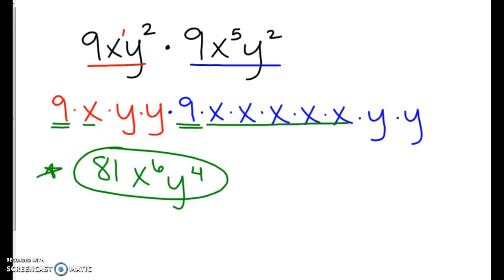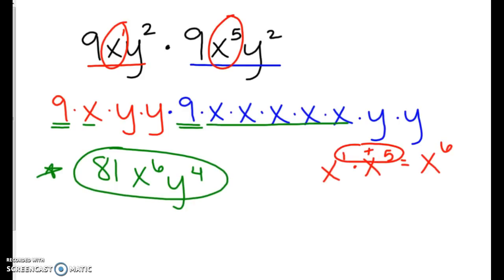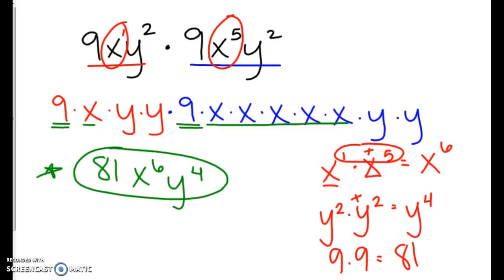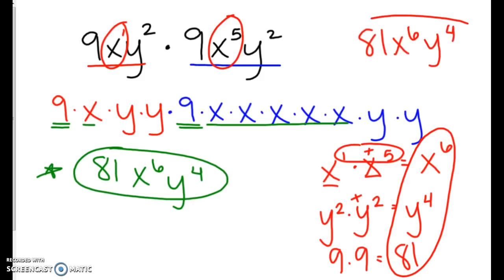Some people can just look at it and combine like terms right off the bat. x to the first times x to the fifth is x to the sixth because we add those exponents when they're the same base. Then y to the second times y to the second — we add those exponents to get y to the fourth. All that's left is 9 times 9 which is 81, and we combine these three terms: 81 times x to the sixth times y to the fourth. It doesn't matter what order you put your variables in — I just happen to put x's first, but order doesn't matter in multiplication. Make sure you are asking questions if you are still not understanding.